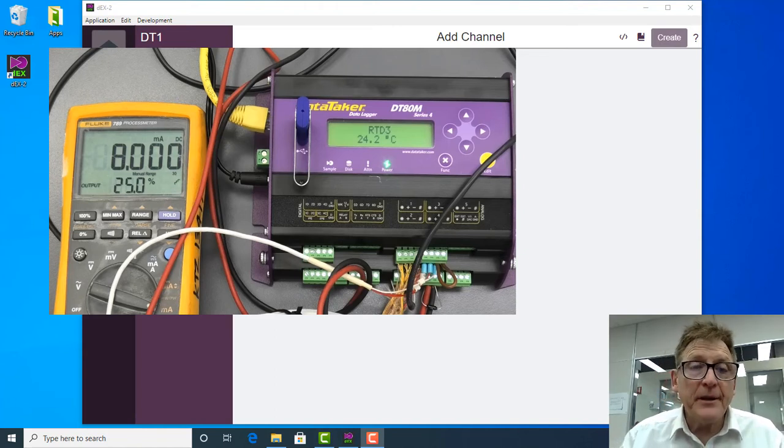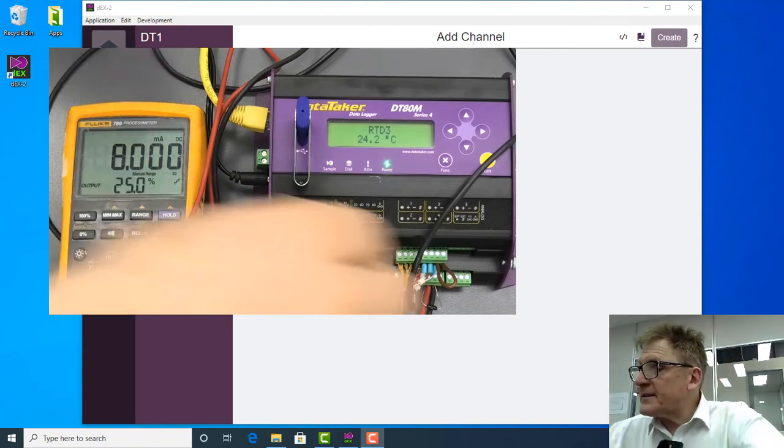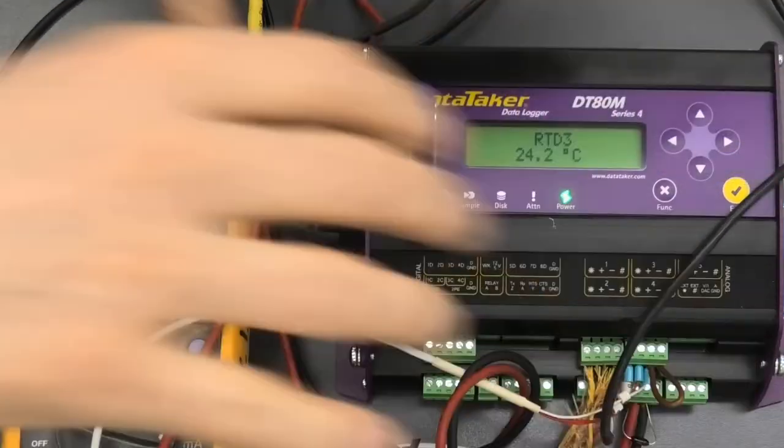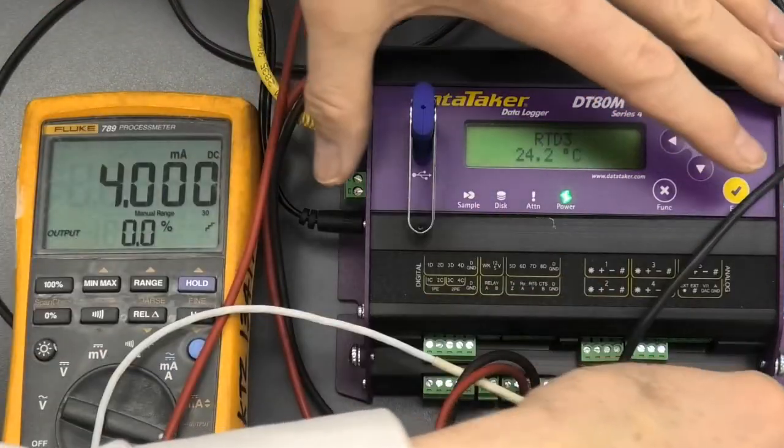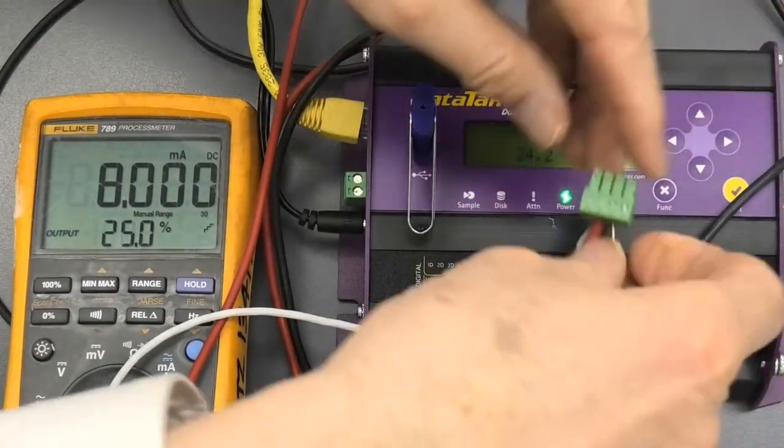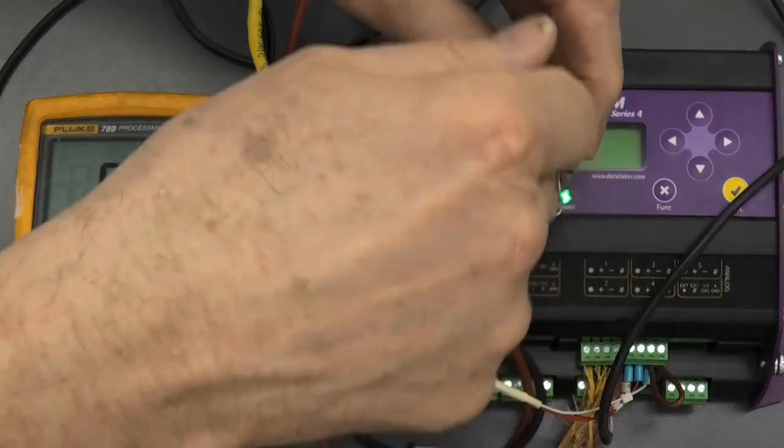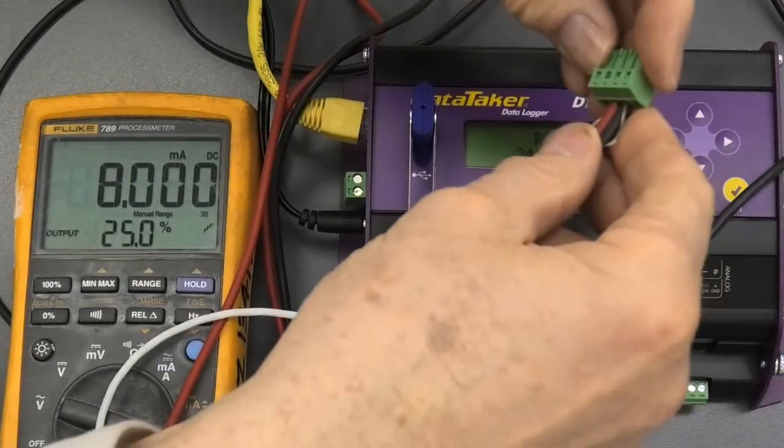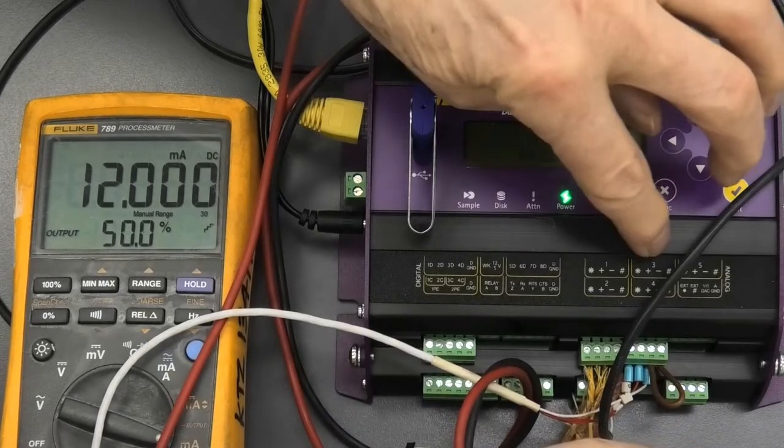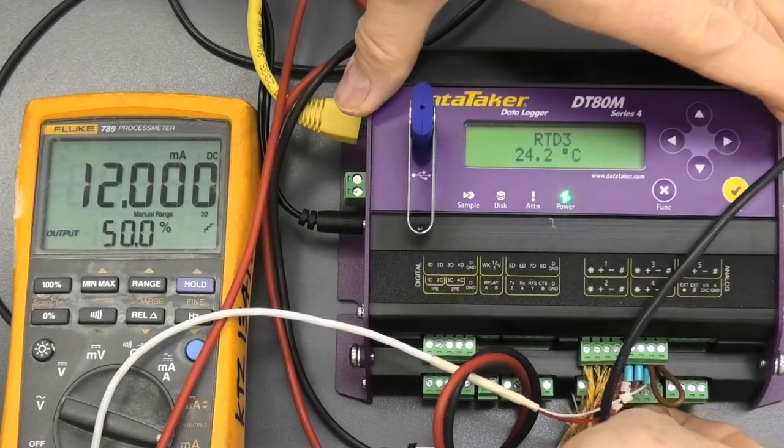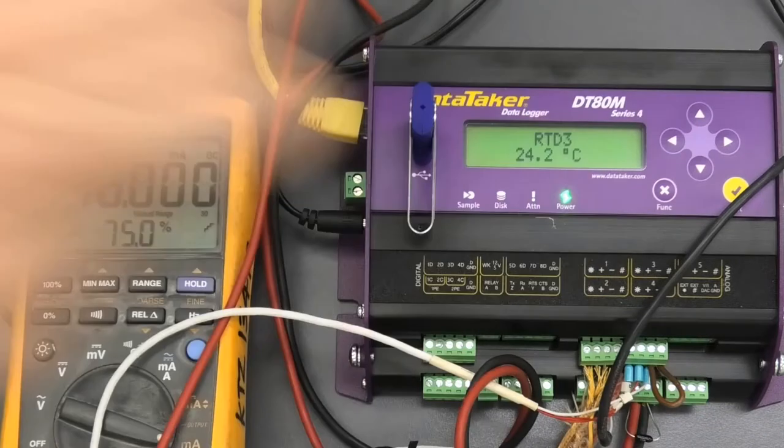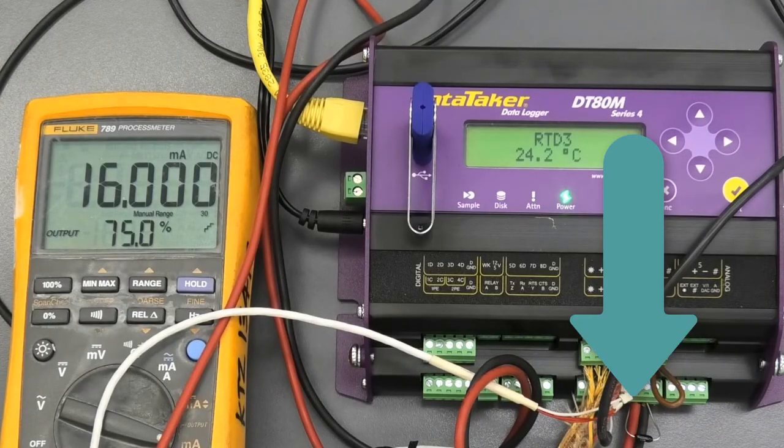We're going to add another measurement to our data taker. In this case, it's going to be current loop. Now I've got a process meter that's providing a loop. So we've got 24 volts on this and I've connected it between just plus or minus here and I'm going to plug it into channel four. That's a 100 ohm resistor.